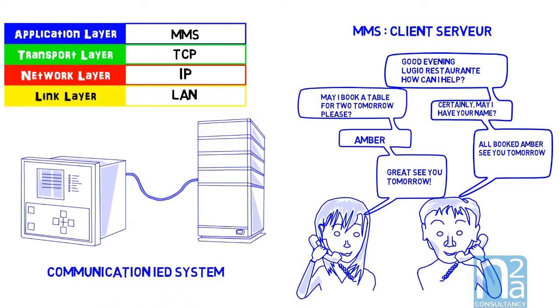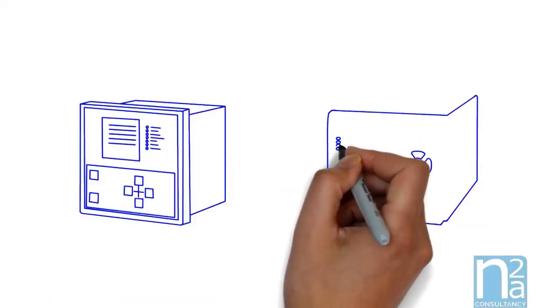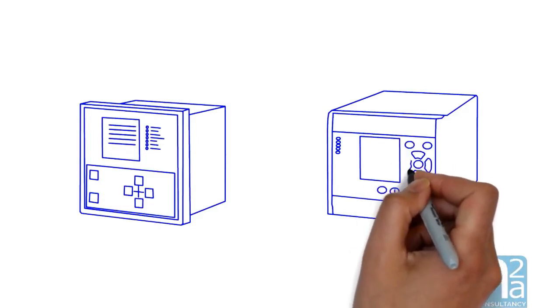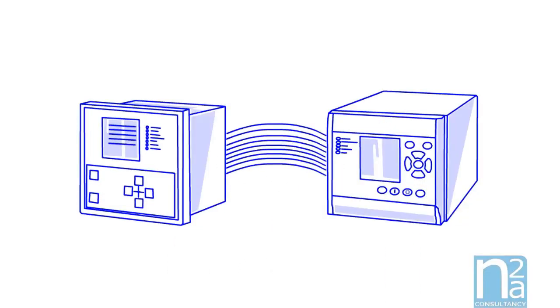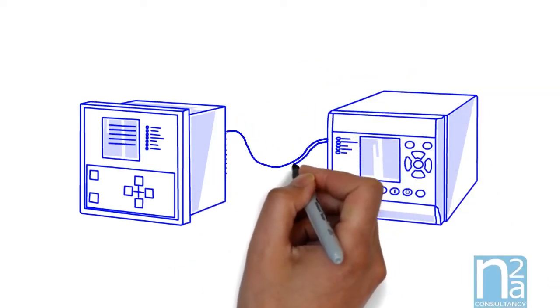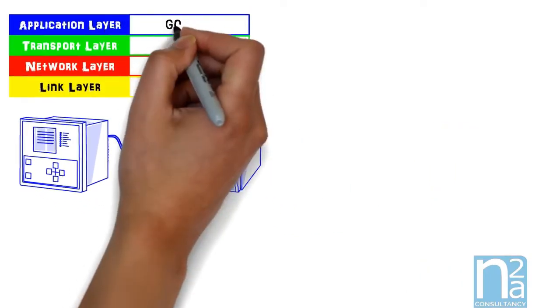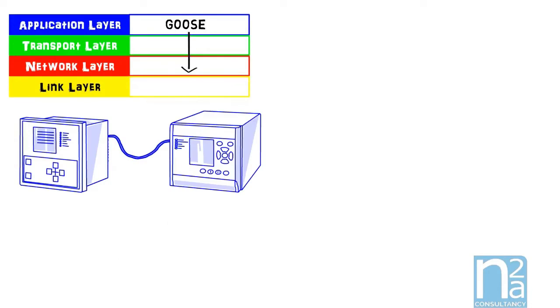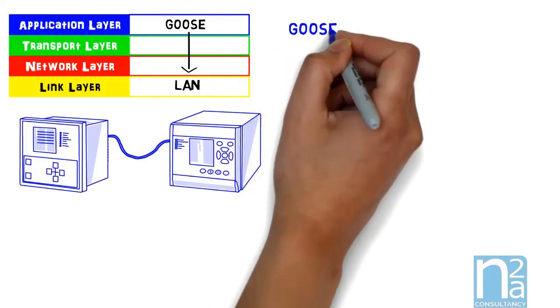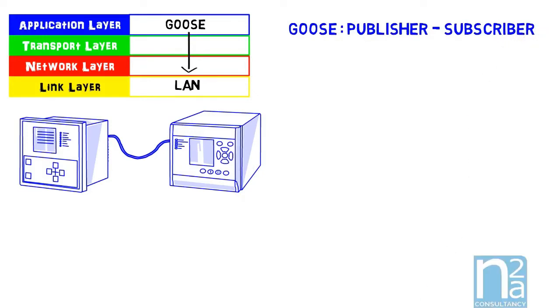The second communication breakthrough of IEC 61850 is the GOOSE message. GOOSE messages stand for Generic Object-Oriented Substation Event. They are used to send urgent messages between IEDs, like tripping and blocking, and replace hard wiring needed for selective interlocking schemes. GOOSE message application is directly linked to the link layer to deliver very quick information in less than 4 milliseconds. It is what we call a real-time protocol. It is based on a mechanism called publisher-subscriber. The message is broadcast over the local network to all devices who are listening.